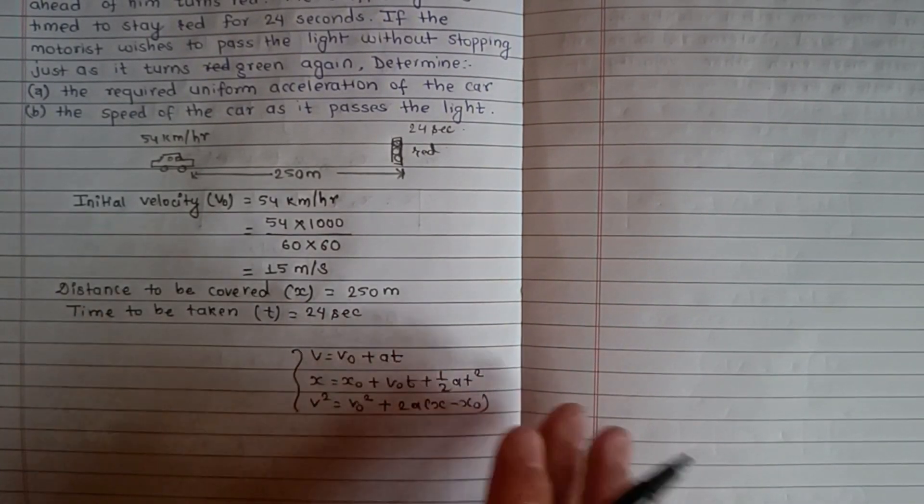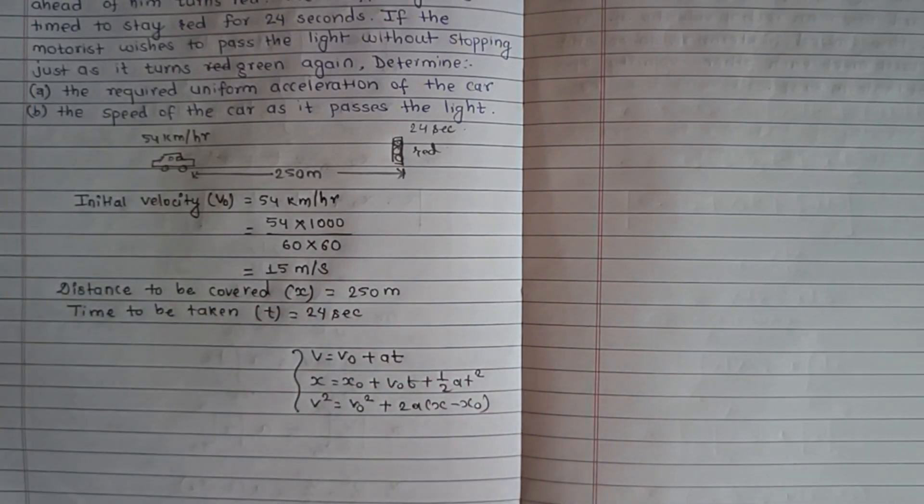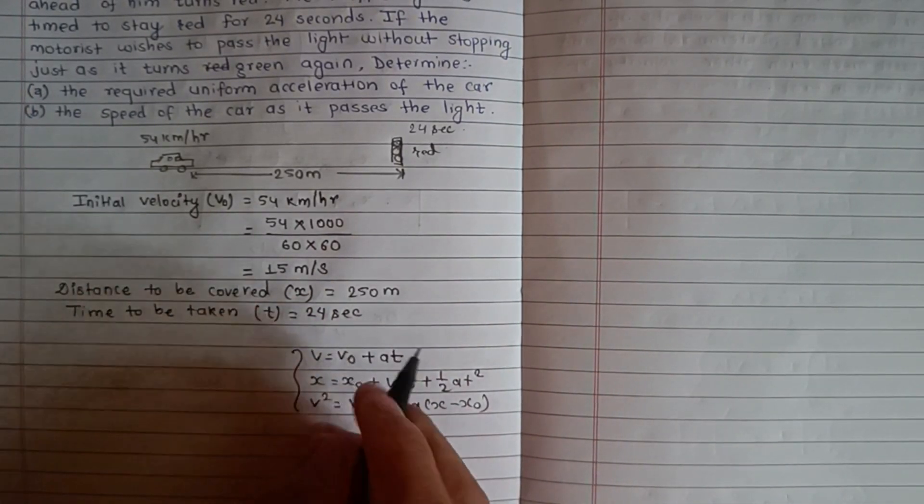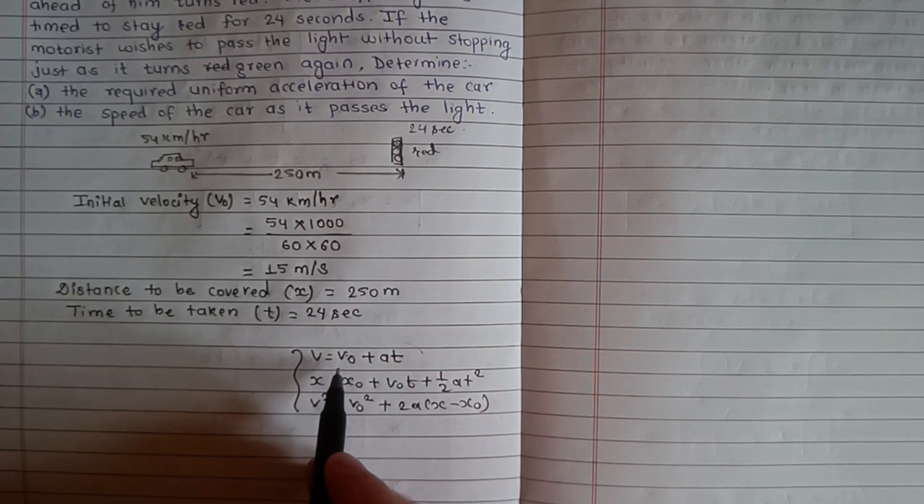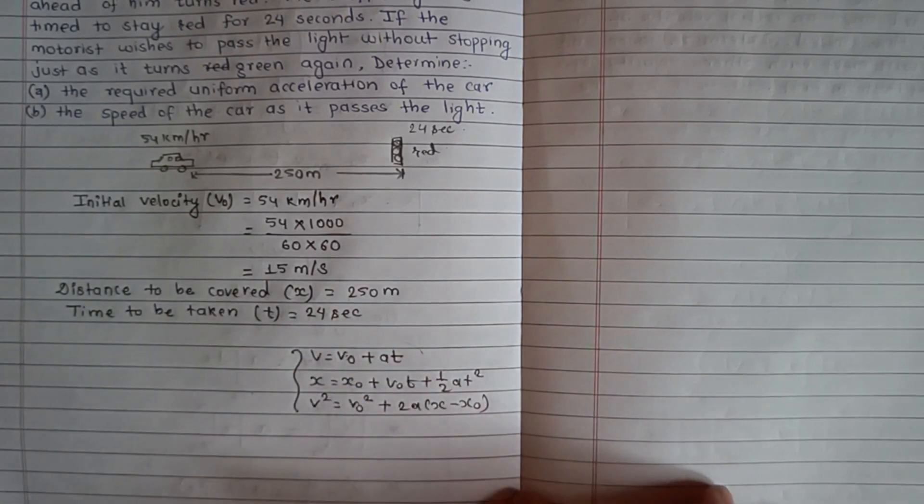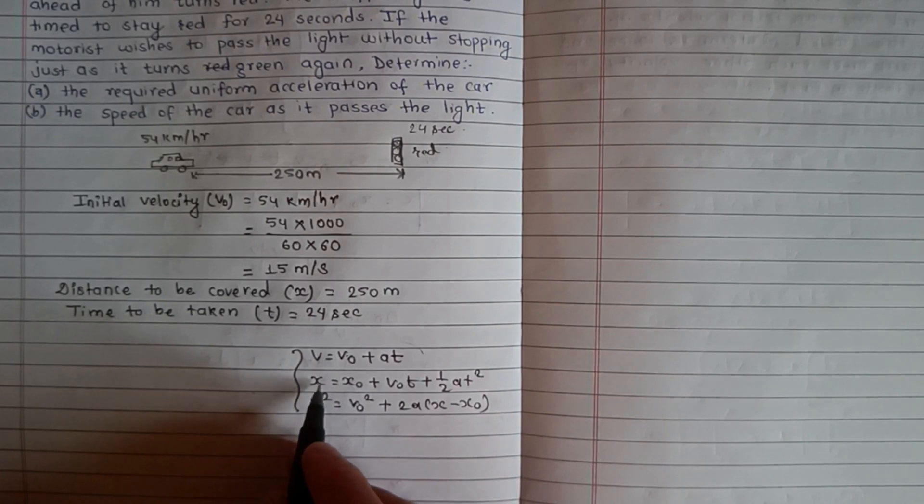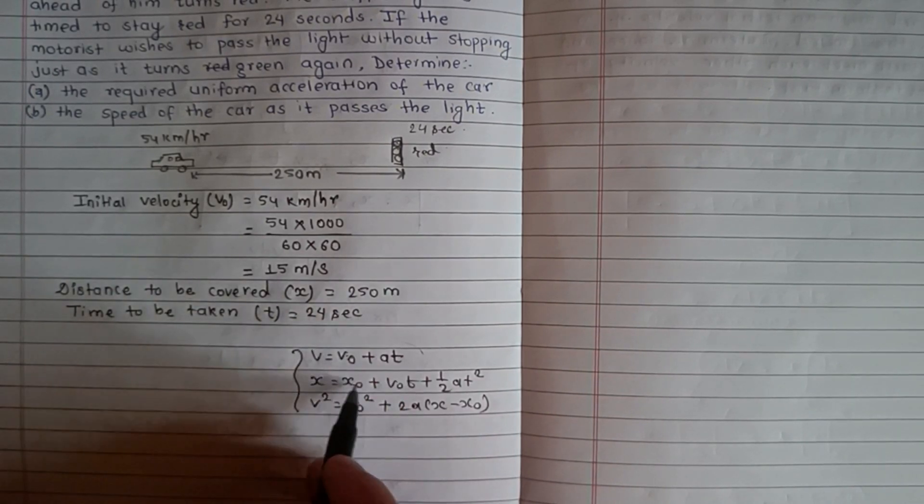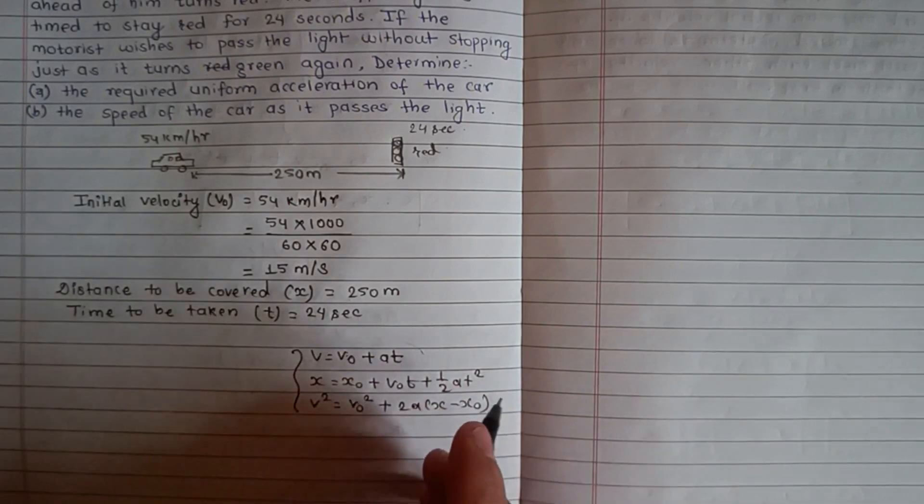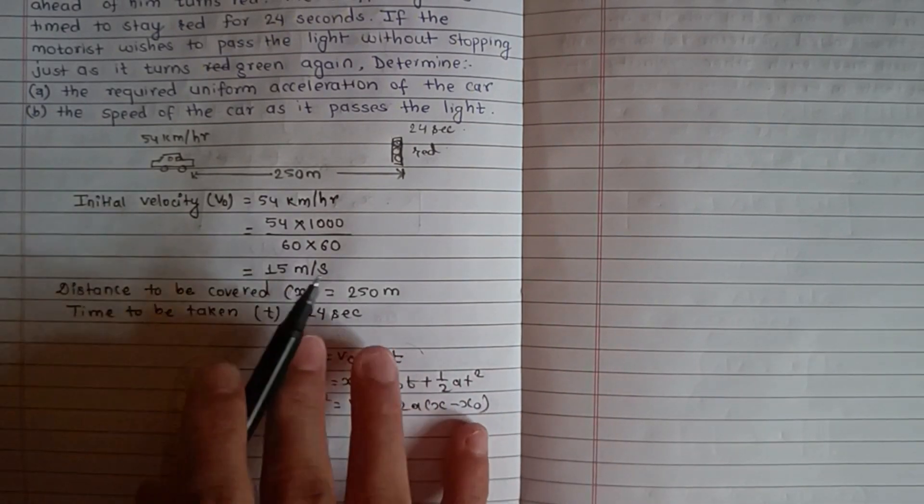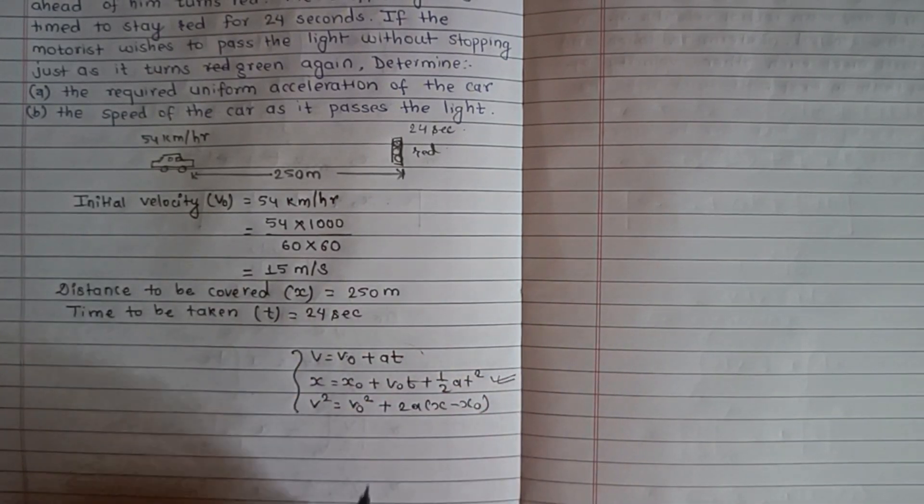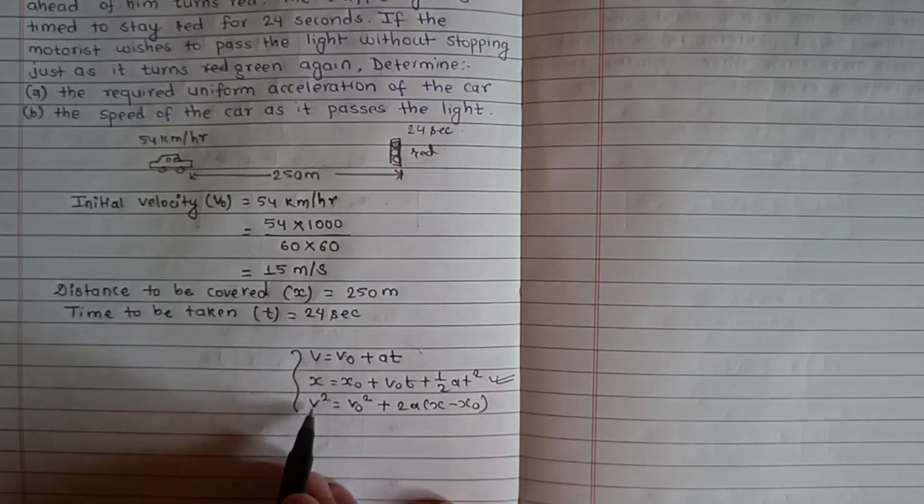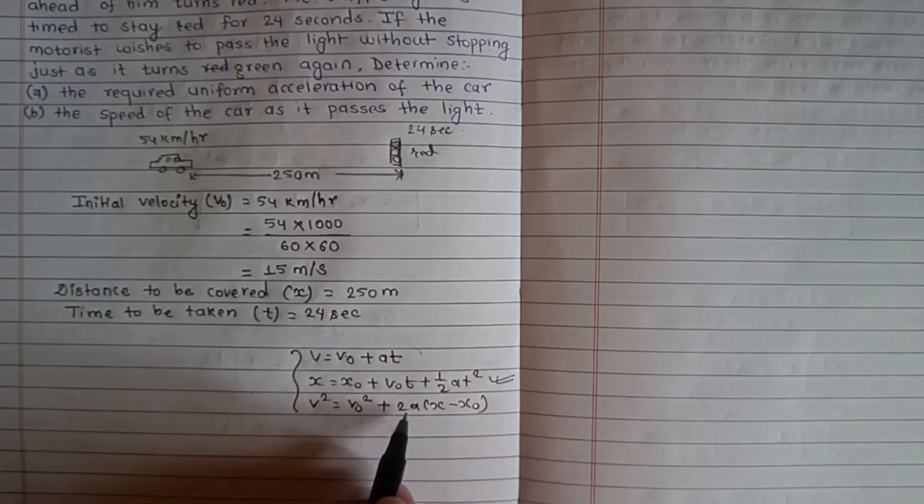First, we need to find the uniform acceleration of the car. Looking at which equation to use, since we know time, initial velocity, and distance, we'll use X equals X not plus V not T plus half A T squared to find acceleration.